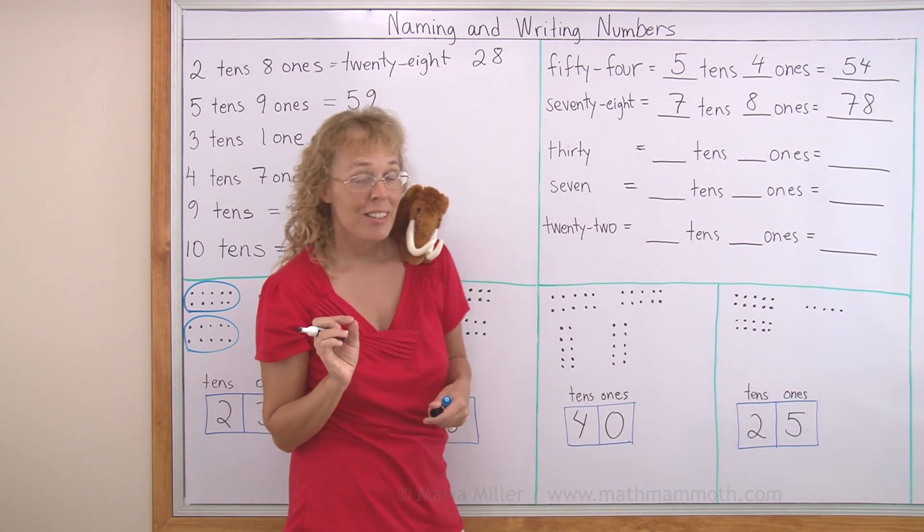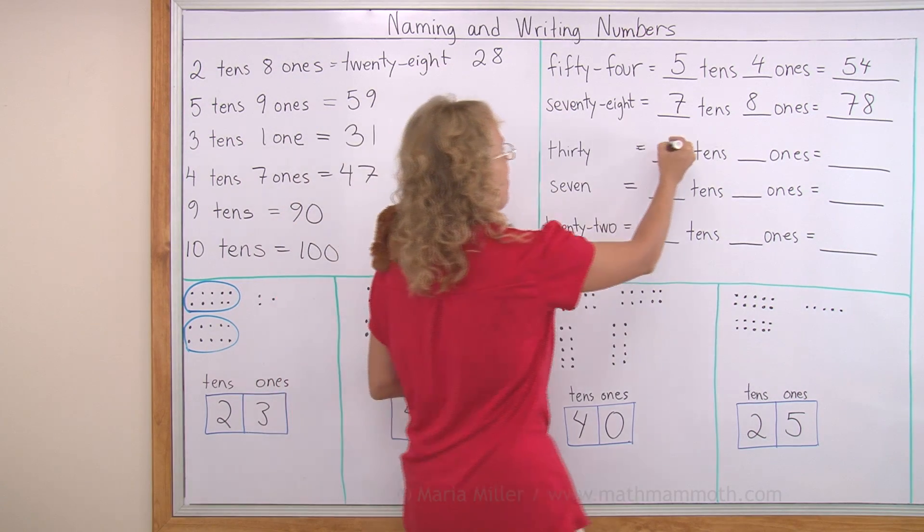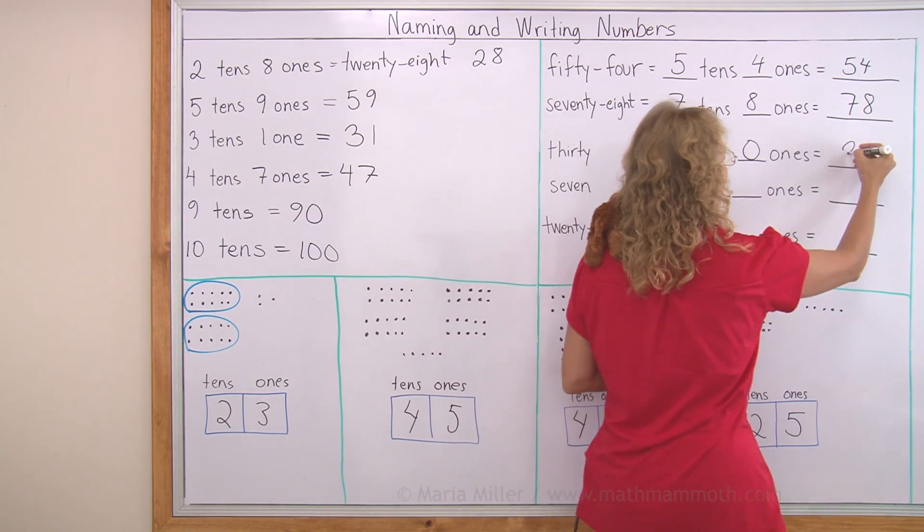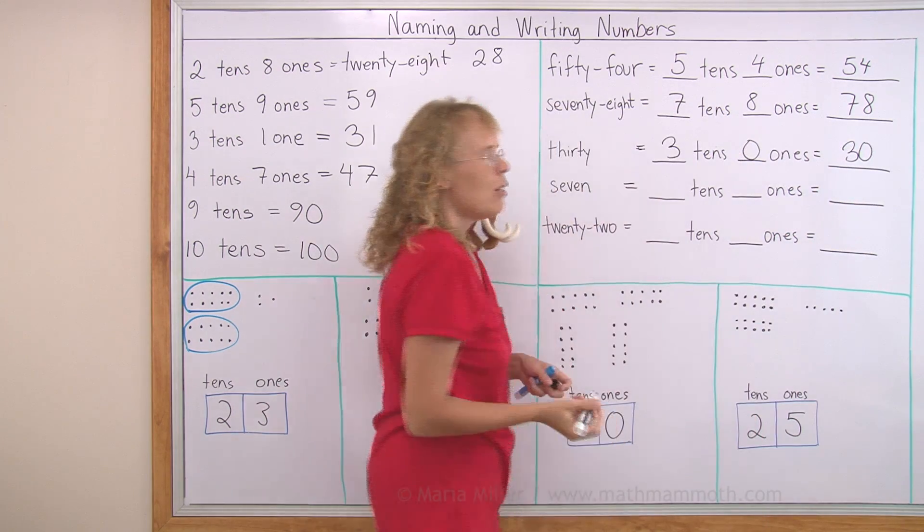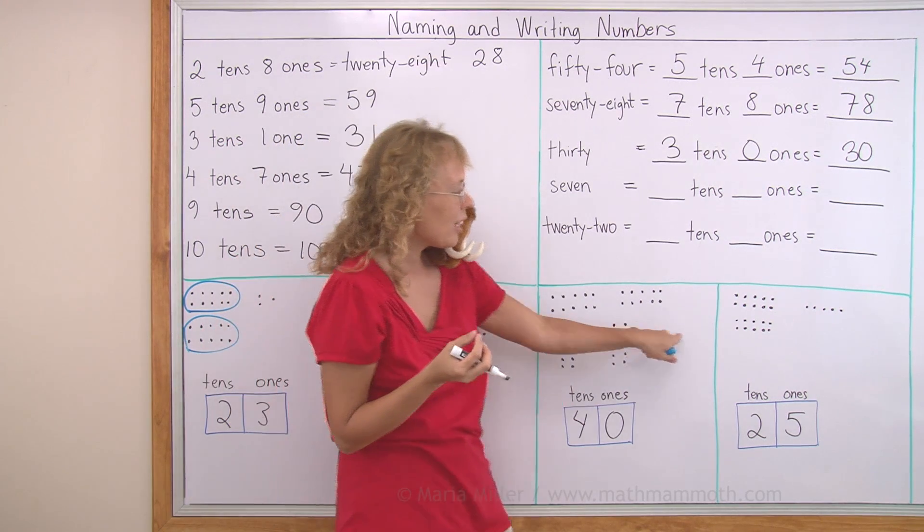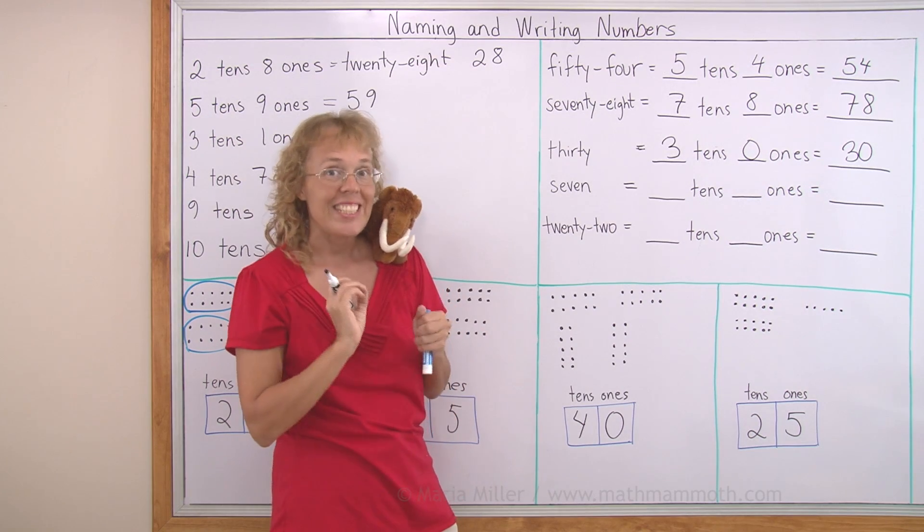30. Do you remember now? That's 3 tens, right? And 0 ones. We need to write 3, 0. Why can't you write just 3? Because 3 would be 3 little ones. And 30 is 3 tens, 3 ten groups.